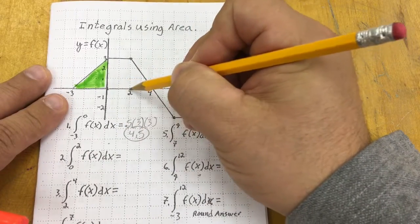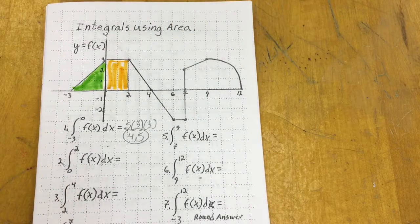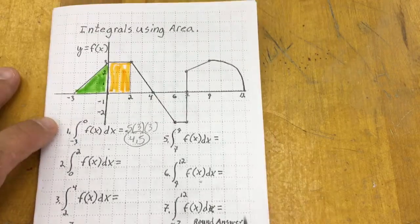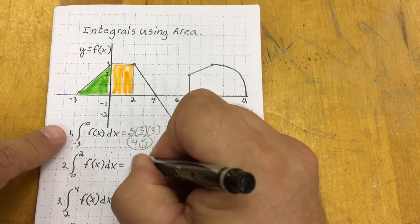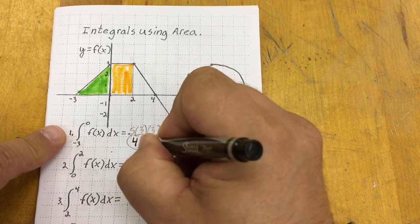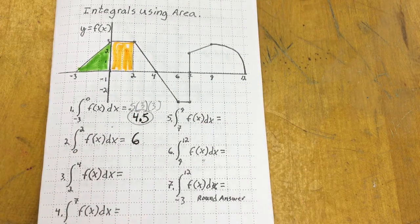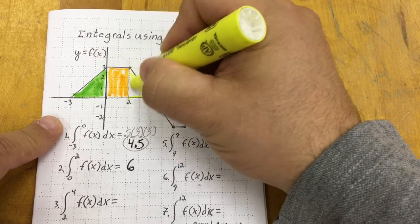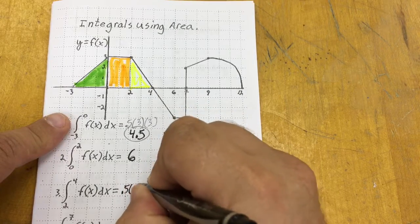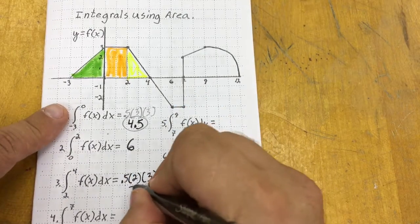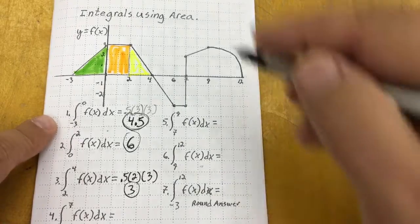Now I want to find the area from 0 to 2, from x equals 0 to x equals 2, and that will be the area of this rectangle. That formula is just base times height, or I can just count the squares: 1, 2, 3, 4, 5, 6. So that area is 6. Now I want to find an area from 2 to 4, and again that's a triangle. The base of that triangle is 2 and the height is 3, so it's going to be 1 half base times height, 0.5 times 2 times 3, and that's going to give me just an area of 3.